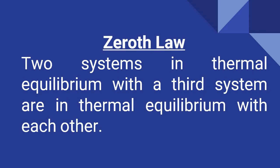The statement of the zeroth law is: two systems in thermal equilibrium with a third system are in thermal equilibrium with each other. That means you are considering three systems, say A, B, and C. If A is in thermal equilibrium with C, and also B is in thermal equilibrium with C, then clearly A and B will be in thermal equilibrium with each other.